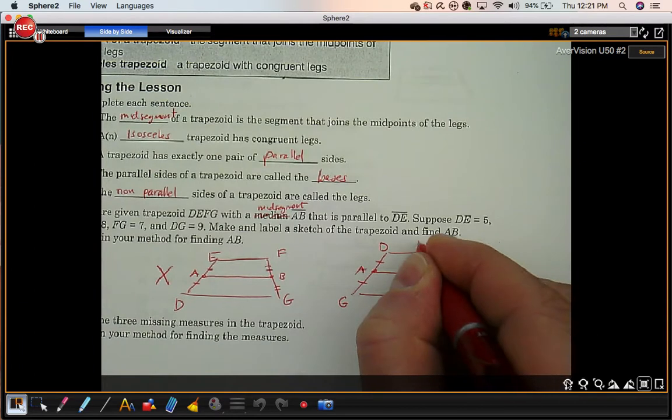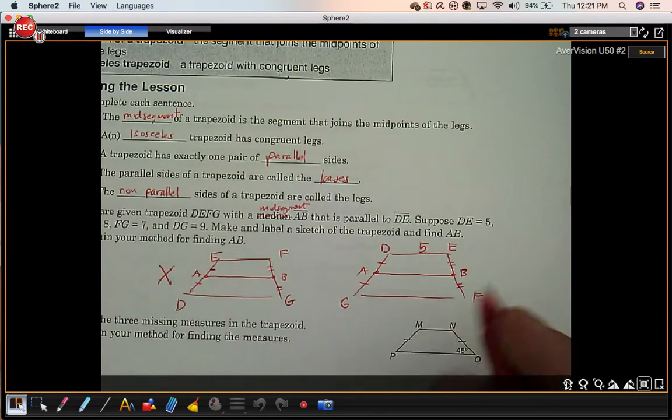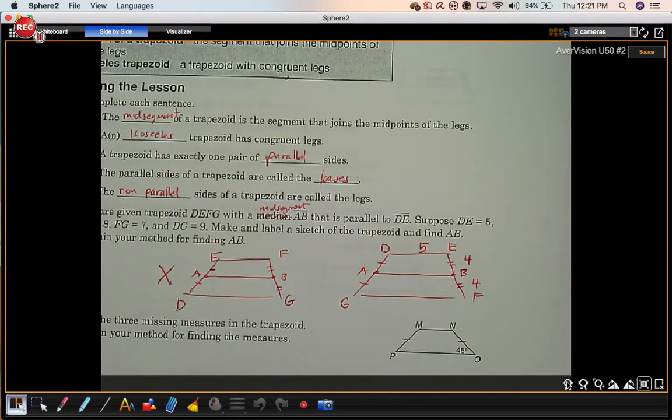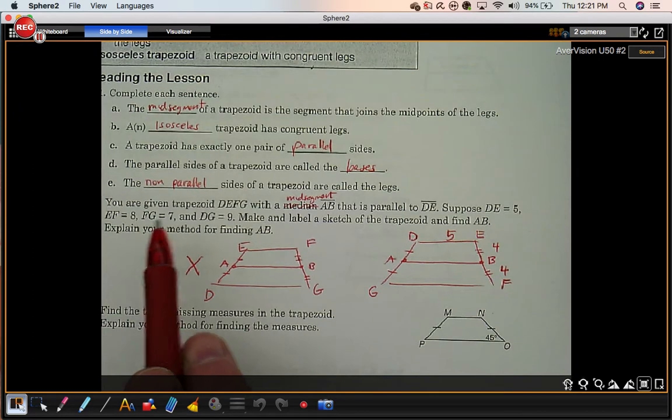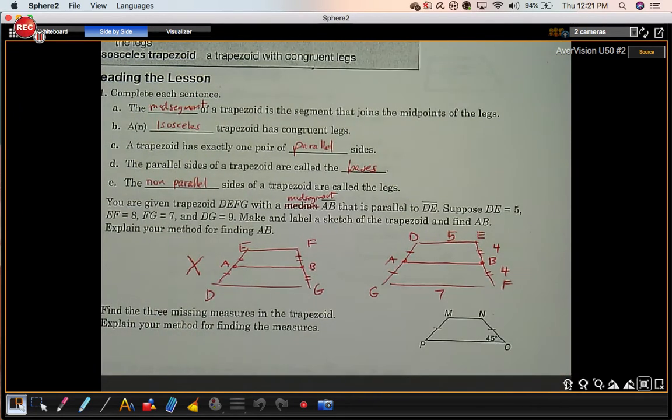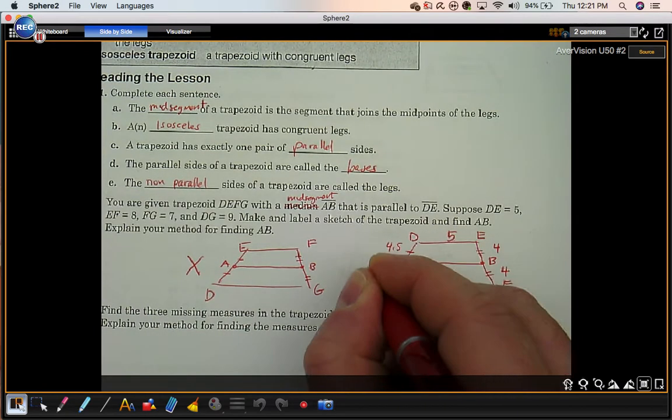From D to E is 5, they're telling us. E to F is 8. So we know those two pieces are 4. F to G is 7. D to G is 9. So each of these would be 4.5.